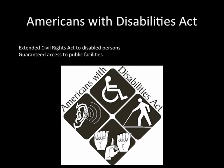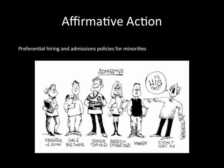Another civil rights development was the Americans with Disabilities Act. You should be noticing the trend — all of these are talking about protecting the rights of groups of people. This extended the Civil Rights Act to now include disabled persons as well, and it guaranteed that they would have access to public facilities. You also want to highlight Affirmative Action, which involves preferential hiring and admissions policies specifically for minorities. The idea is to increase college education access for minorities and make it illegal to refuse to hire someone because they're a minority — schools and workplaces are supposed to give preference to minorities. For more details, listen to the Supreme Court cases Regents v. California and the Michigan cases.